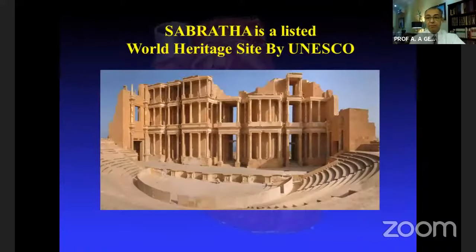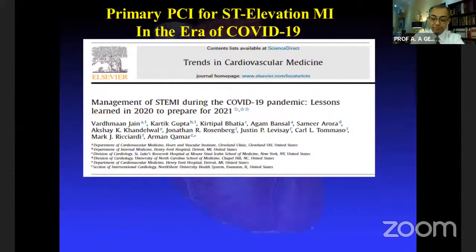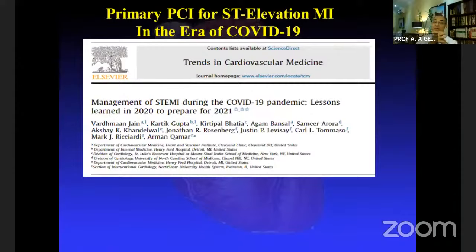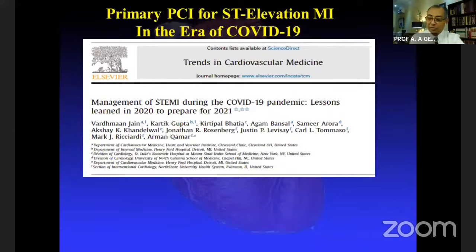Sabratha is another UNESCO World Heritage Site — a beautiful city. Incidentally, Septimus Severus died while invading Britain; he was one of the few emperors who successfully invaded Britain and died in York.